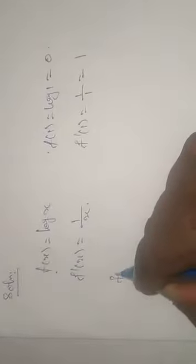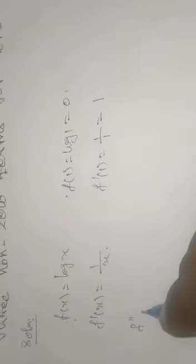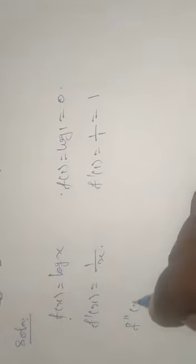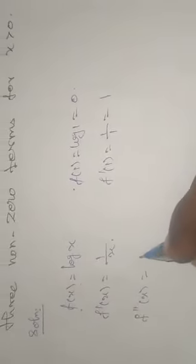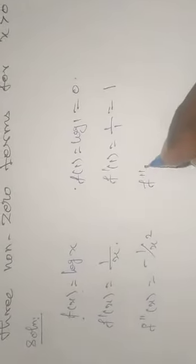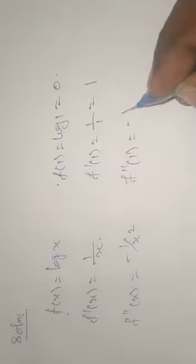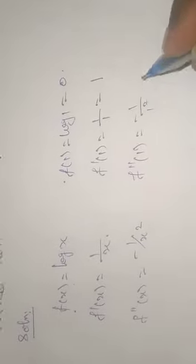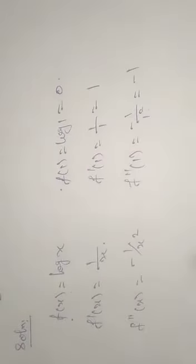Then f double dash of x: differentiating 1 by x gives minus 1 by x squared. Then f double dash of 1 equals minus 1 by 1 squared, giving the value minus 1.